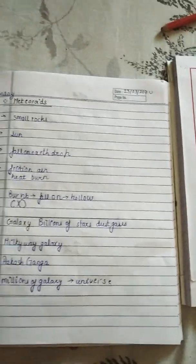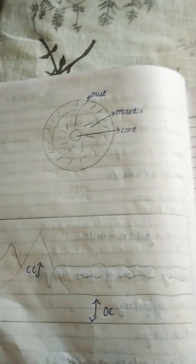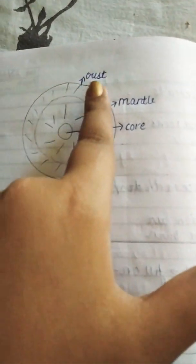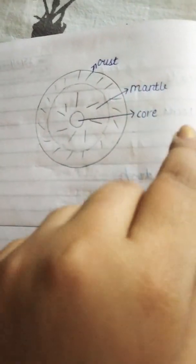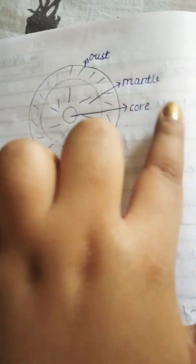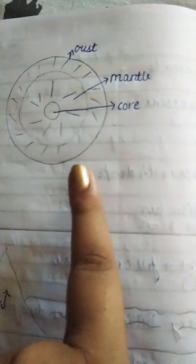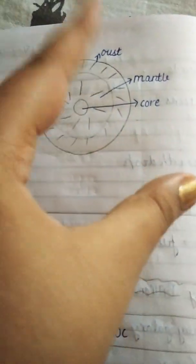So here we go. We move to the diagrams of the interior of the Earth first. So the upper layer you can see is crust. Second is mantle. Third is inner core. You have to draw this rough diagram in your notebook.